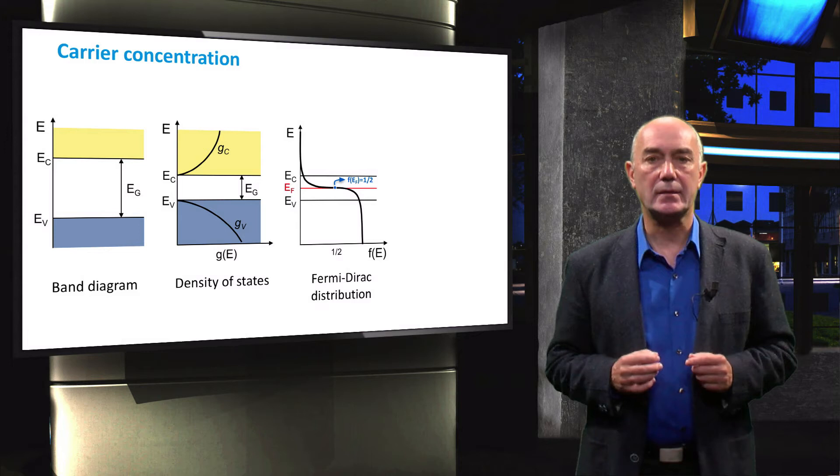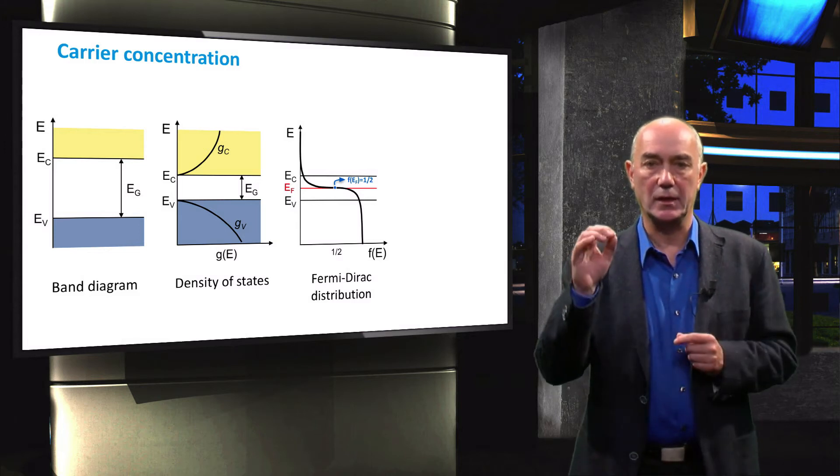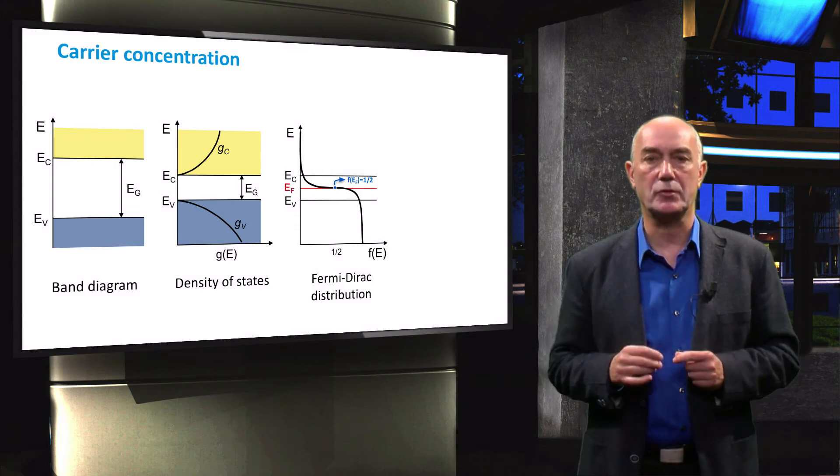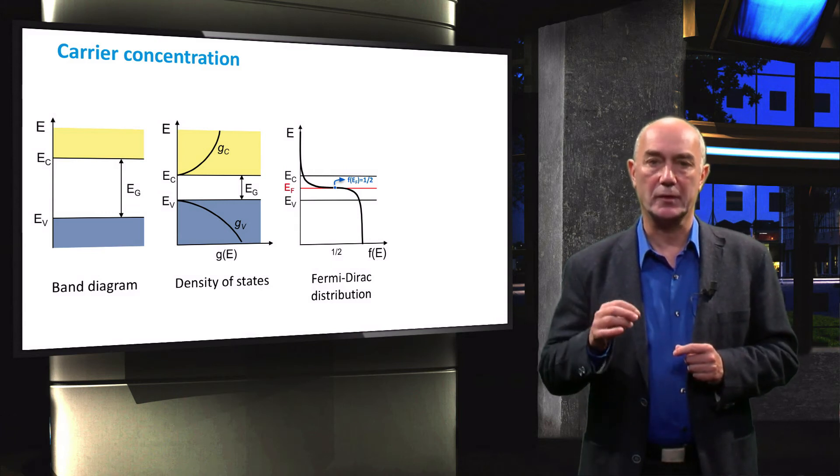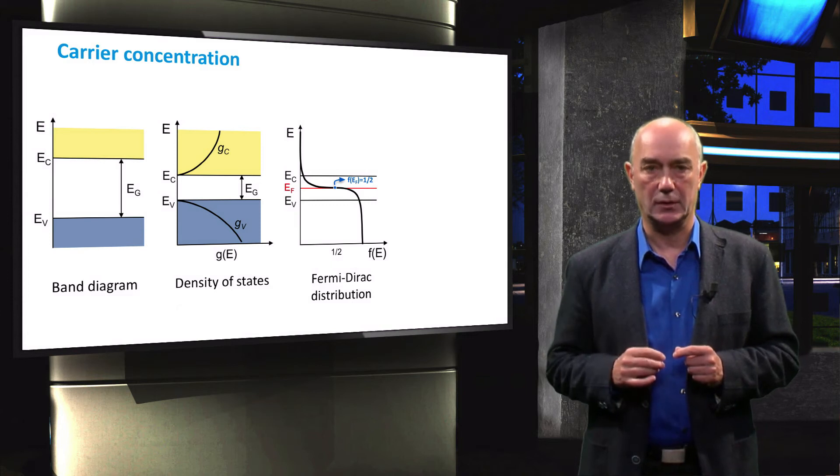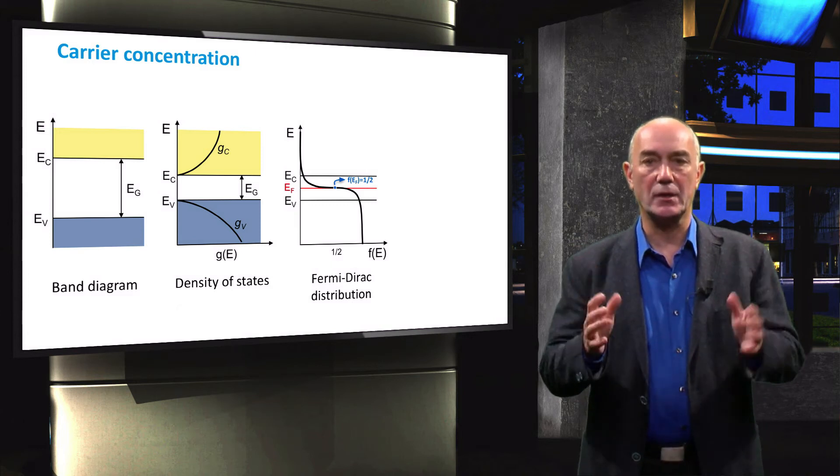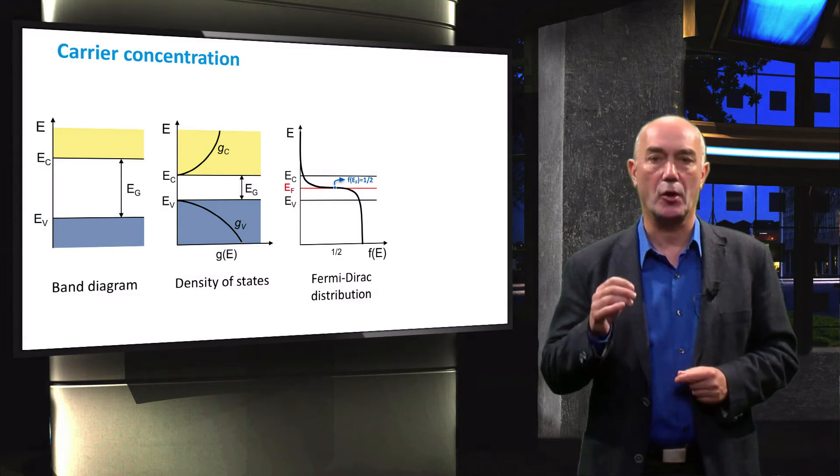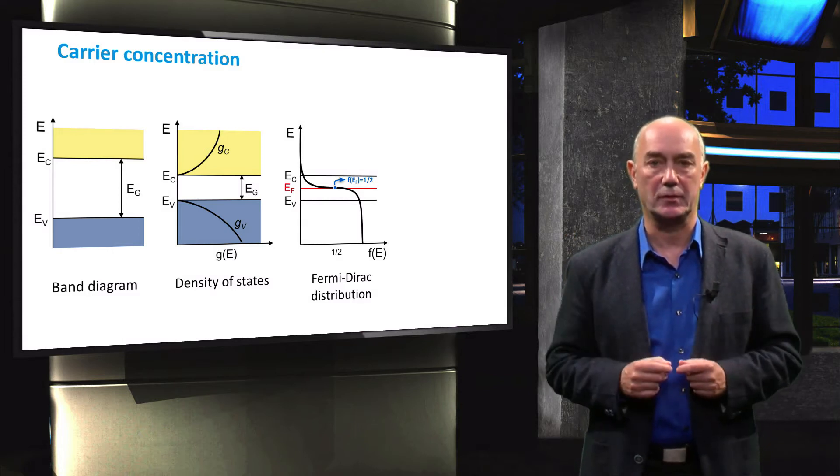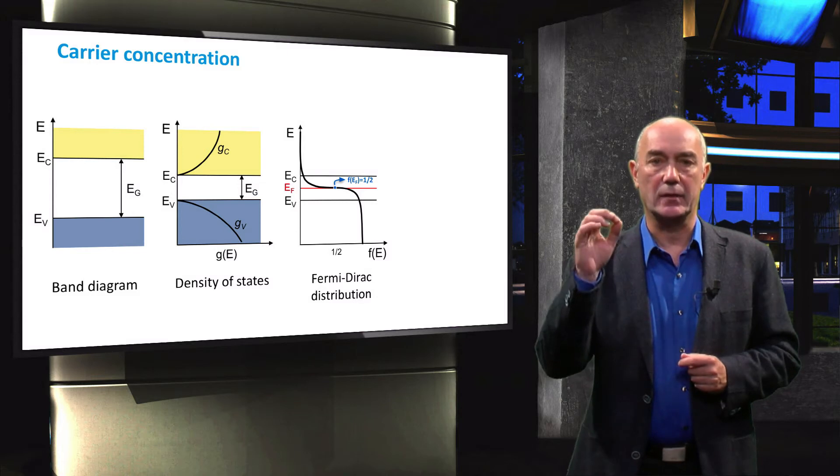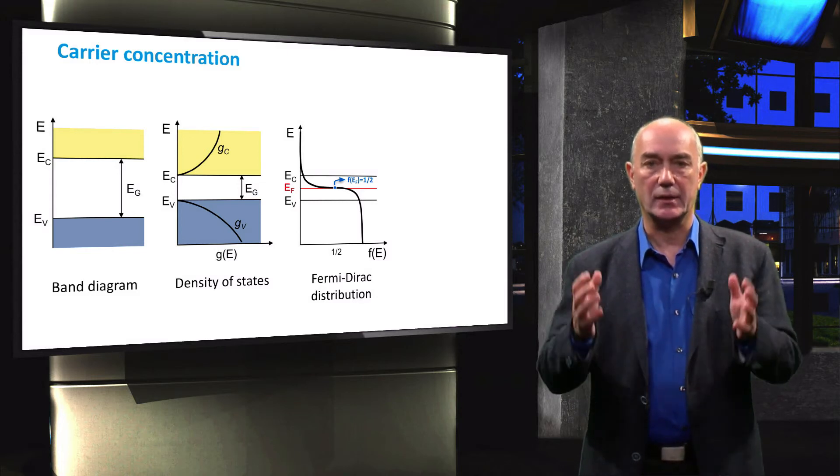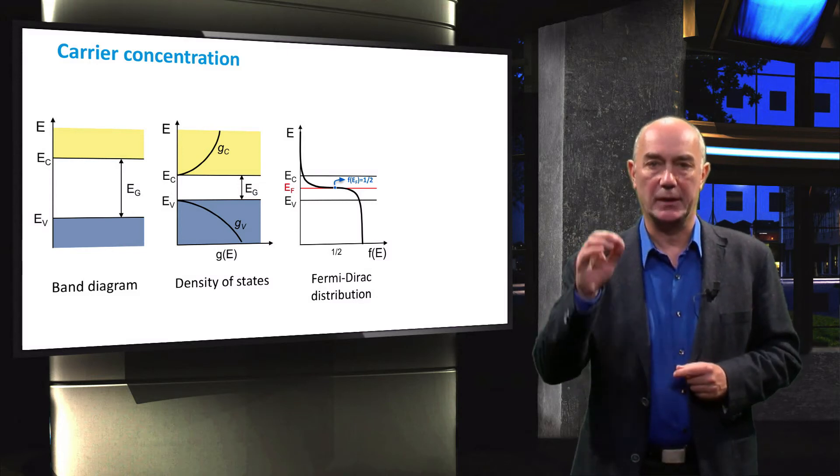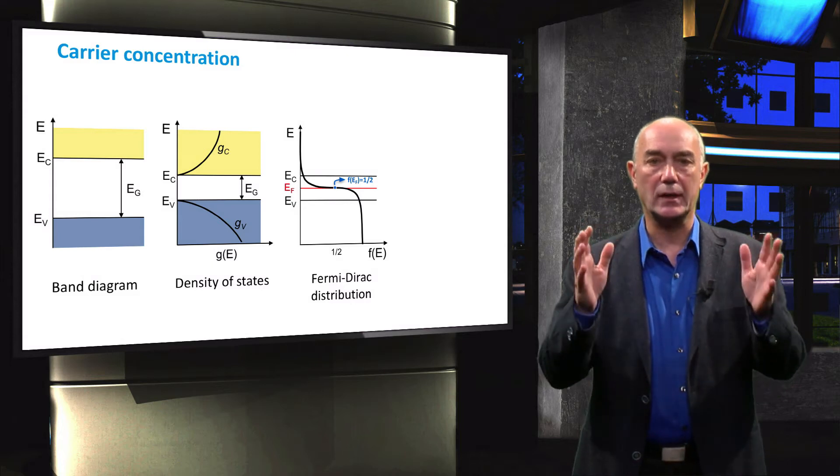In the next step, we looked at the occupation of these energy states. For this, we introduced the Fermi-Dirac distribution function, also often called the occupation function. This distribution function gives the probability that a certain energy state is occupied at a certain temperature. The Fermi-Dirac distribution function is a general rule applicable to electrons in all kinds of systems.